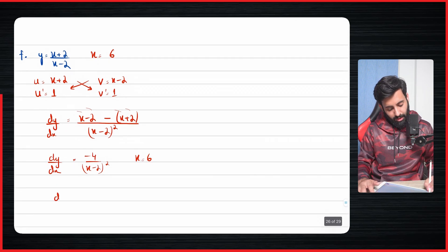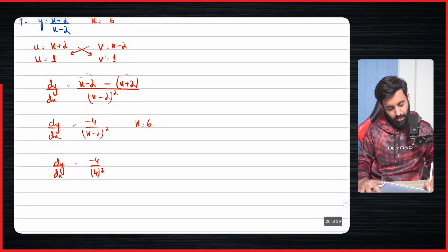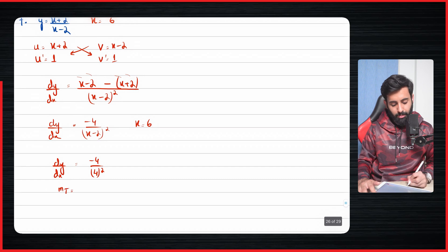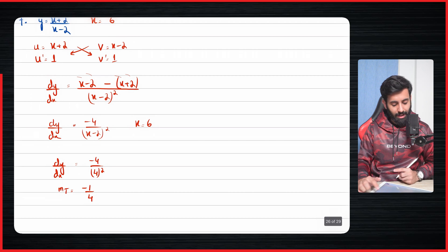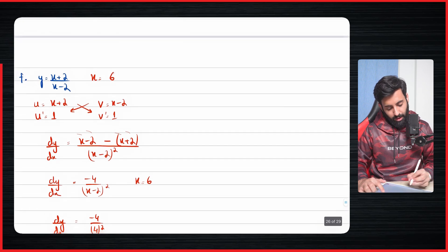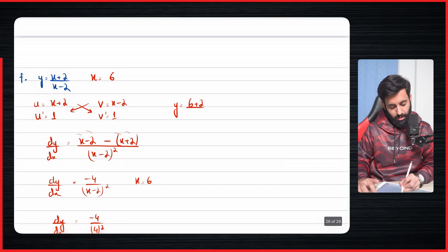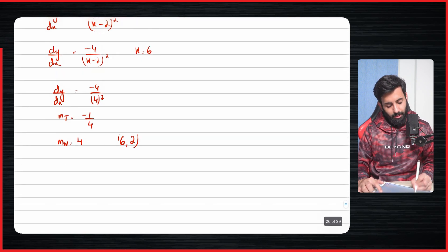The value of x is six, so plug in six: minus four over (six minus two) is four, and don't forget to square it. So you get minus four over sixteen, which simplifies to minus one upon four — the gradient of tangent. That means the gradient of normal is positive four. To find the y-coordinate, plug x = 6 into the original equation: six plus two over six minus two is eight over four, which equals two.